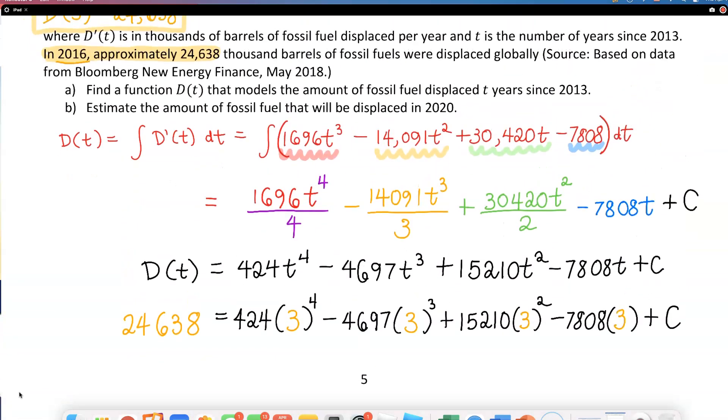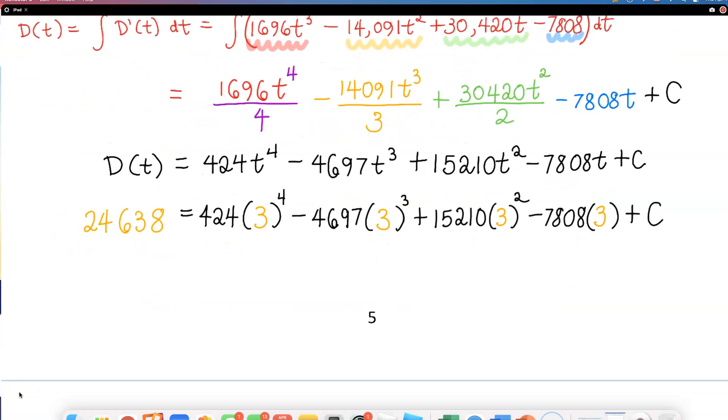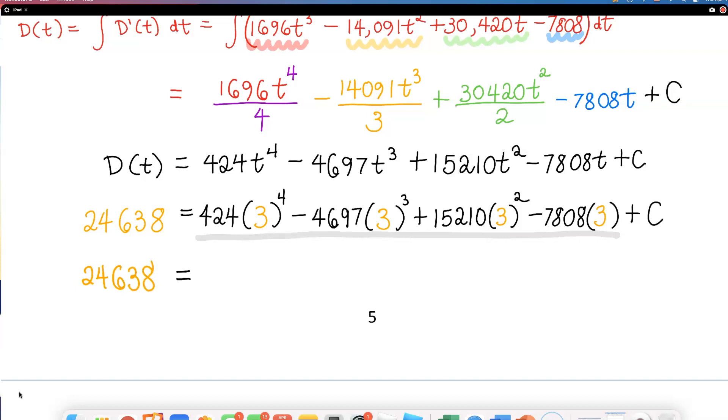All this will equal 24,638. I'm going to get my calculator to evaluate what this is. When I type that in, I got 20,991 plus C. To solve for C, I subtract both sides by 20,991, so C comes out to be 3647.